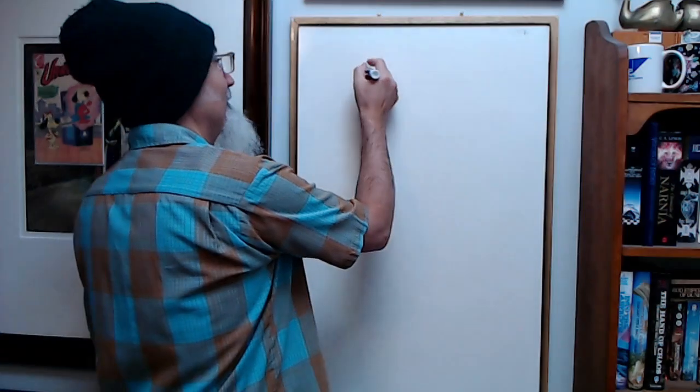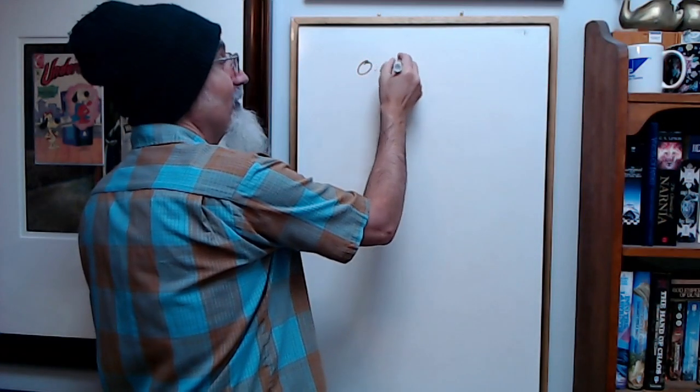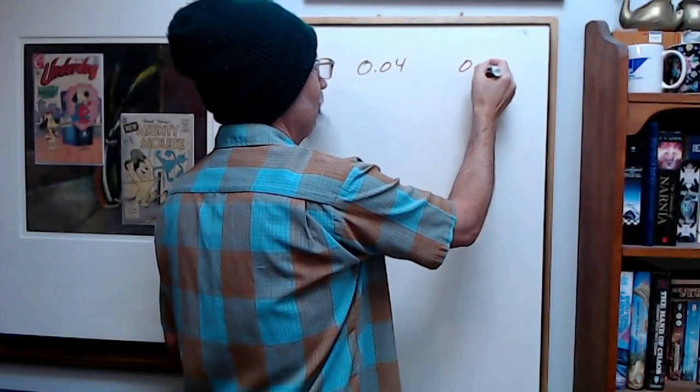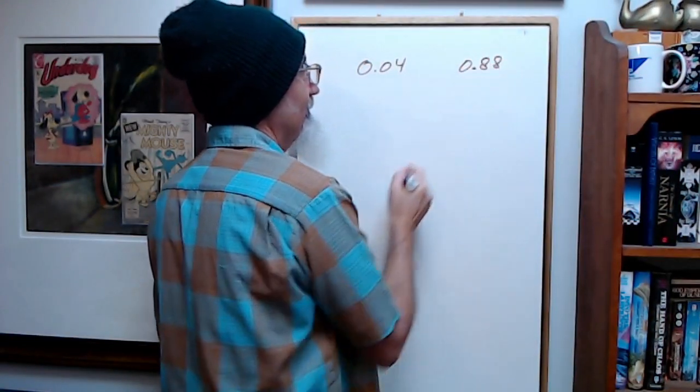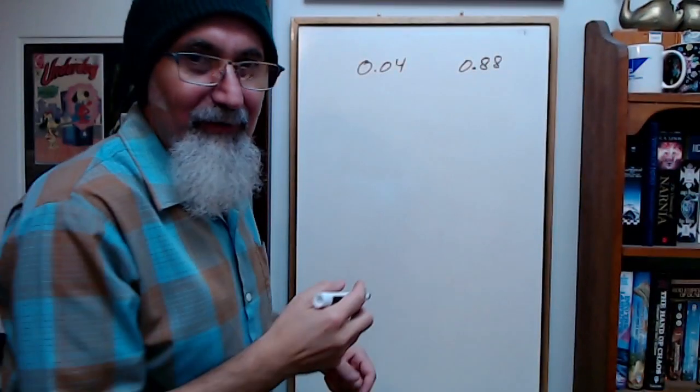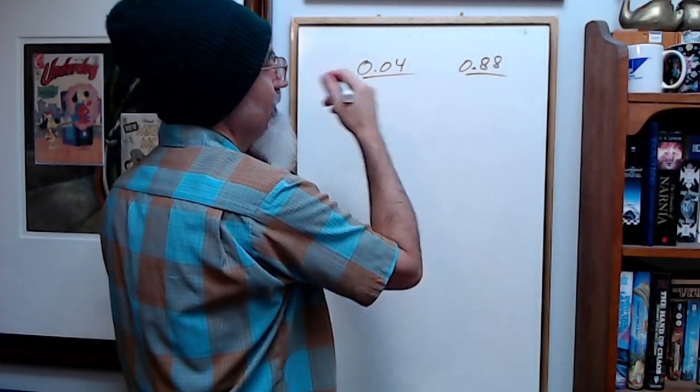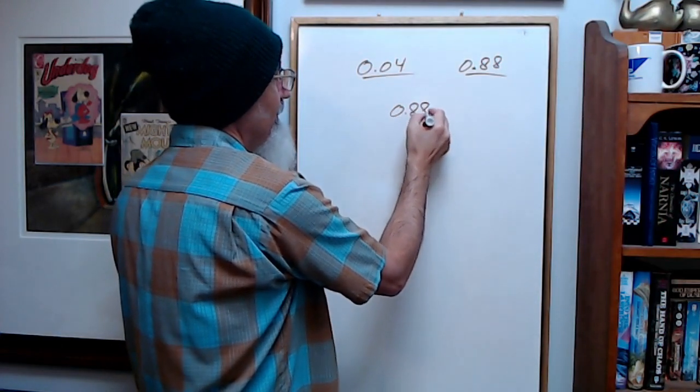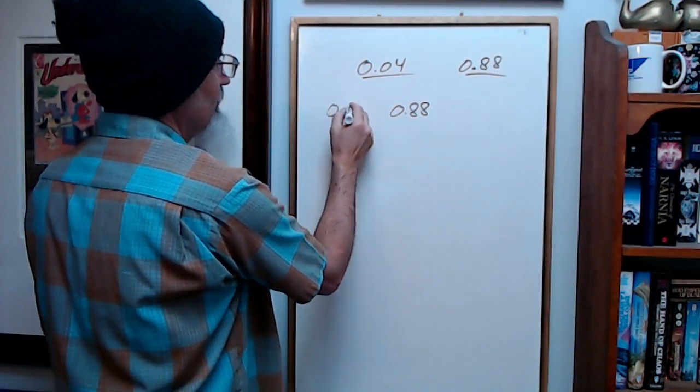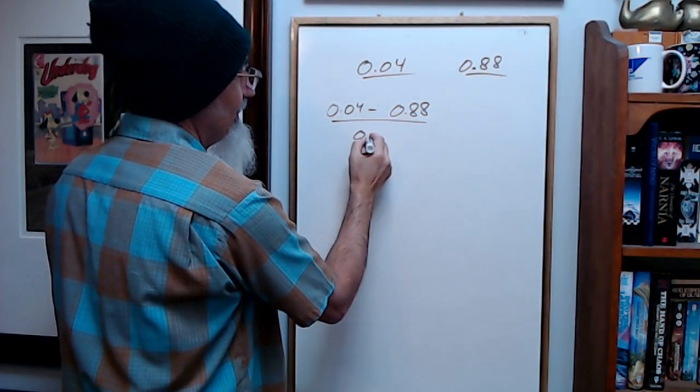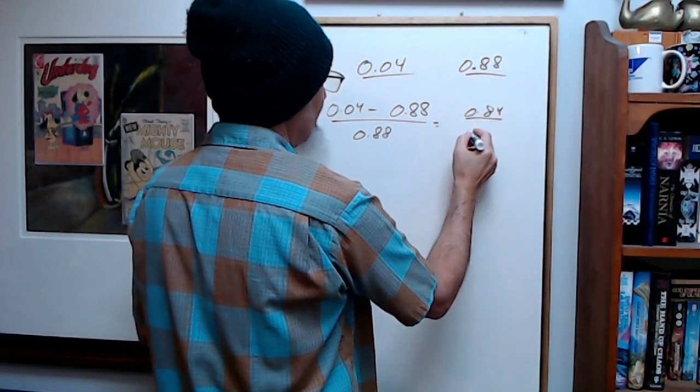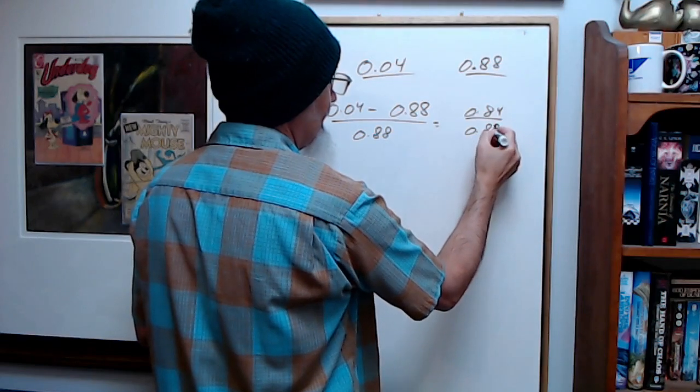What's the difference between 0.04 and 0.88? What can you do with these two numbers? Well, you could do this: 0.04 minus 0.88 divided by 0.88. This is equal to 0.84 divided by 0.88.